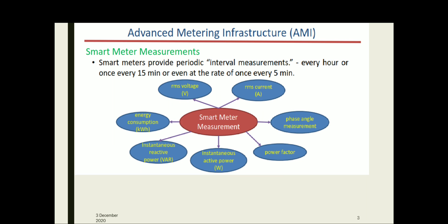A smart meter provides periodic interval measurements — every hour, every 50 minutes, or even every 5 minutes — measuring various parameters and transmitting these values to the meter data management system. A smart meter can measure RMS voltage, RMS current, phase angle, power factor, instantaneous active power, reactive power, energy consumption, etc. All these values can be stored as a repository in the meter data management system.